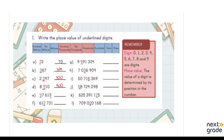Now we have a 5-digit number. Reading the place values from the right: 1s, 10s, 100s, 1,000s, and then 10,000 — so we write 40,000. Next, the underlined digit is at the 4th place value, which is the thousands place, so we write 2,000.